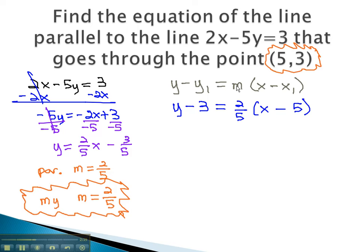To put this in slope-intercept form, we would start by distributing through the parentheses. y minus 3 is 2 fifths x minus 2. We finally get the y alone by adding 3 to both sides.